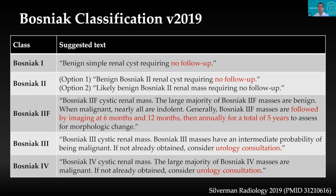For Bosniak type I or II, no follow-up is needed. For 2F, follow-up at 6 months, 12 months, then annually up to 5 years. For types 3 and 4, urology consultation is recommended. That is the basic management outcome when you see a mass.